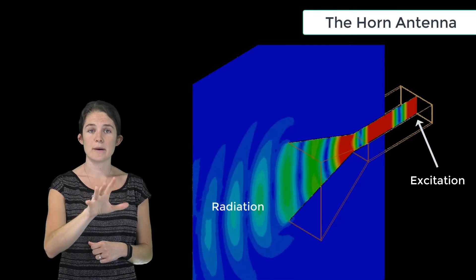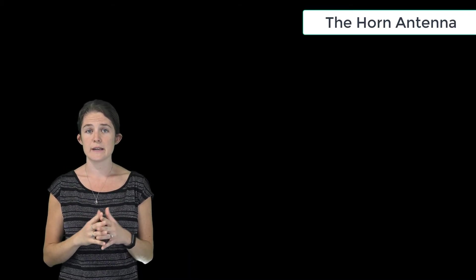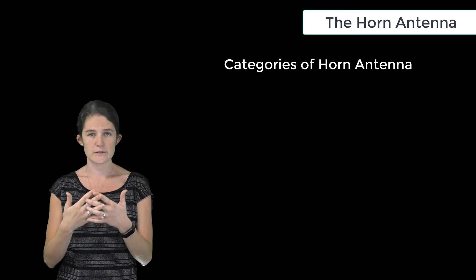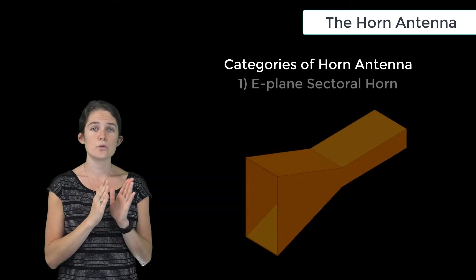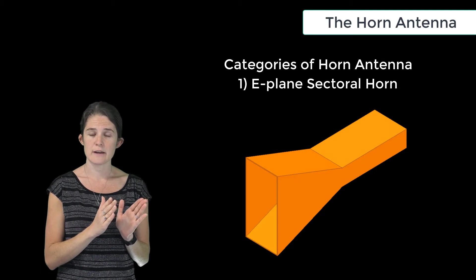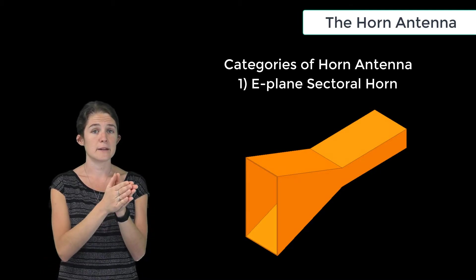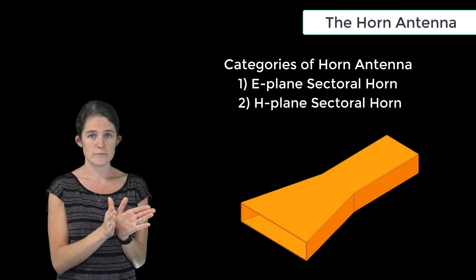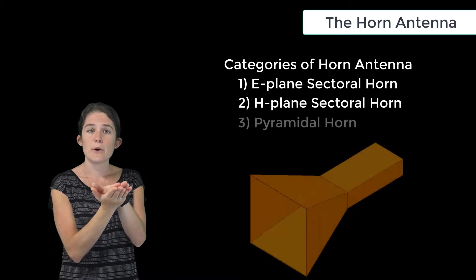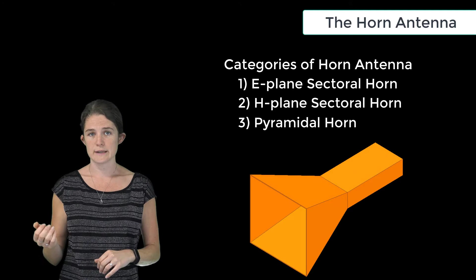Horn antennas may be further subdivided into three categories based on the direction of the horn flare. An antenna that flares only in the direction of the electric field in the guide is known as an E-plane sectoral horn. An antenna that flares only in the direction of the magnetic field in the guide is known as an H-plane sectoral horn. And an antenna that flares in both the E-plane and the H-plane is called a pyramidal horn antenna.